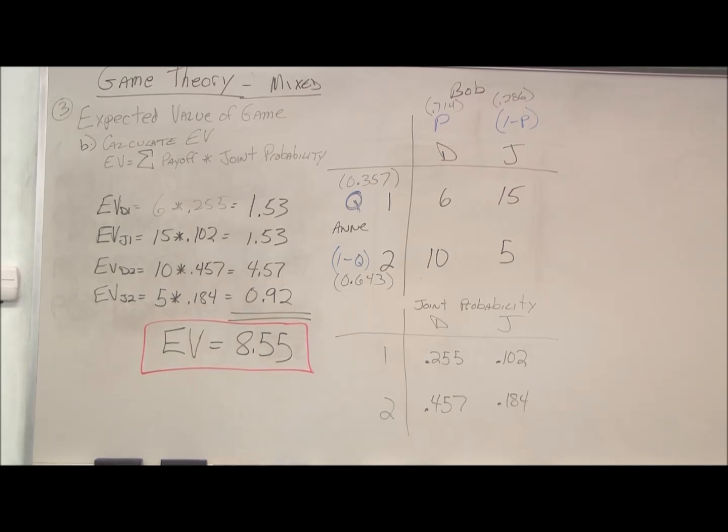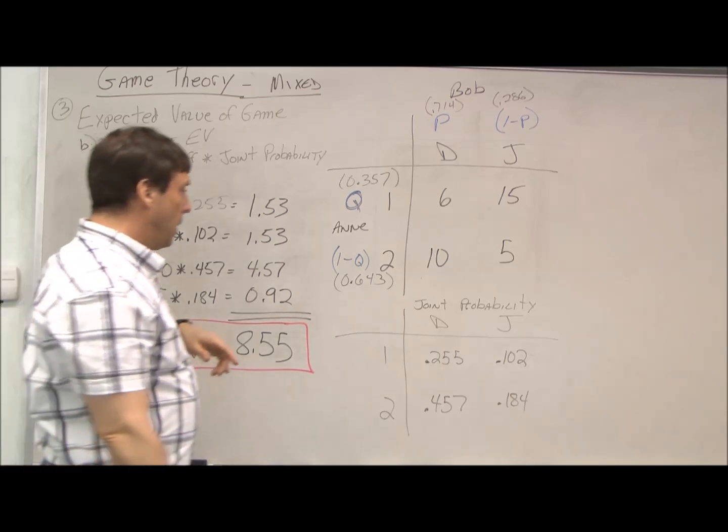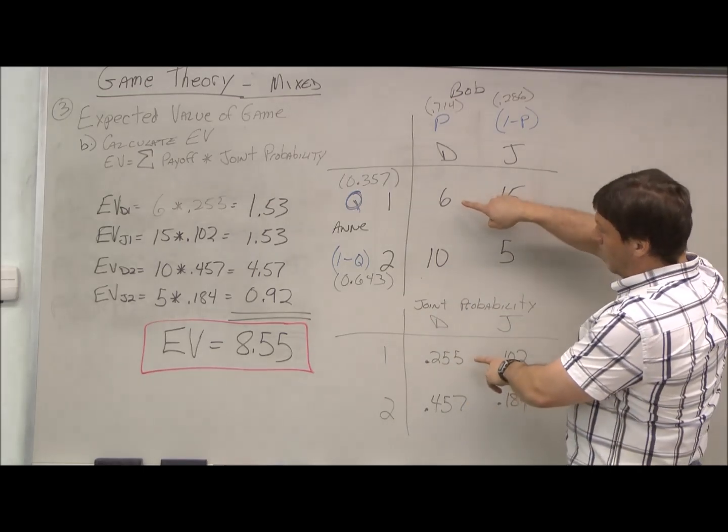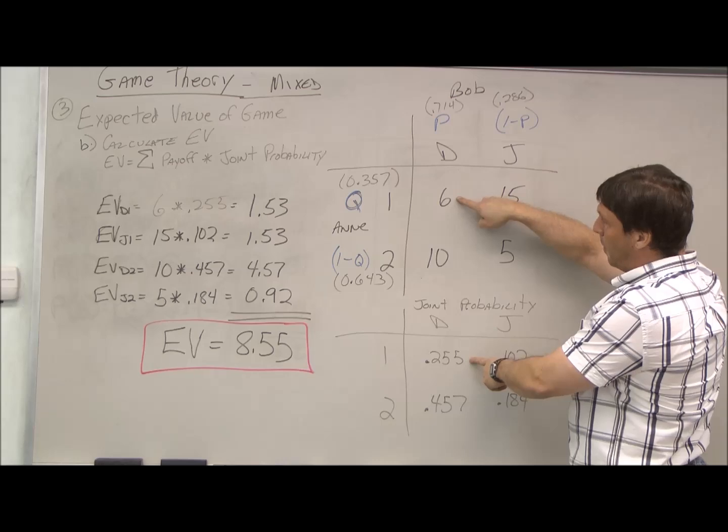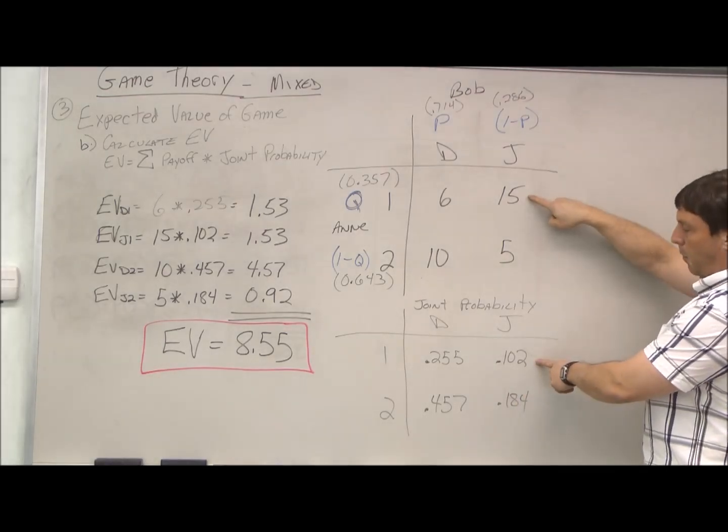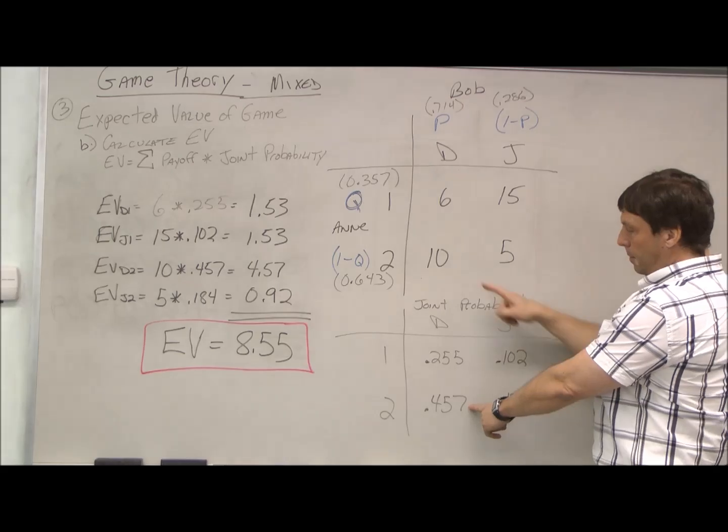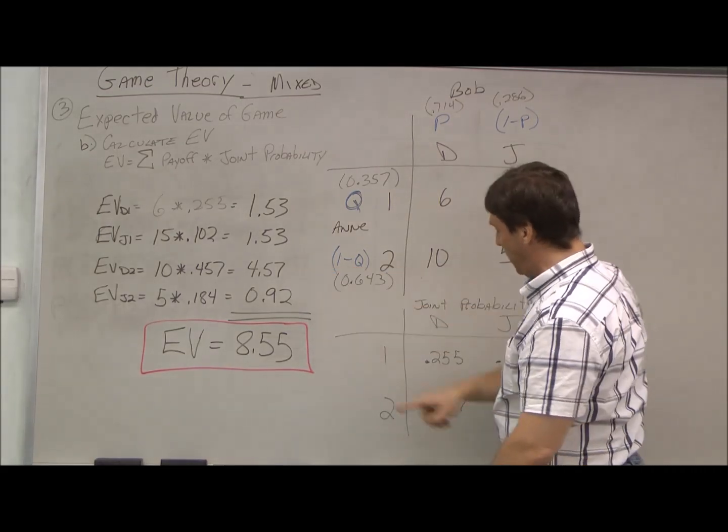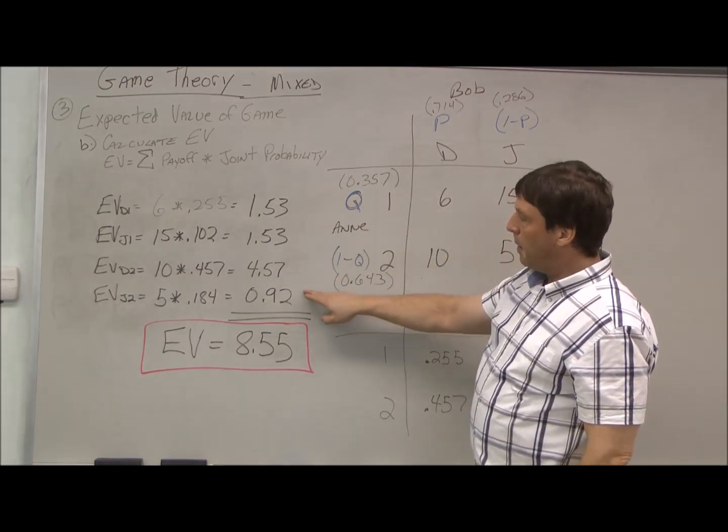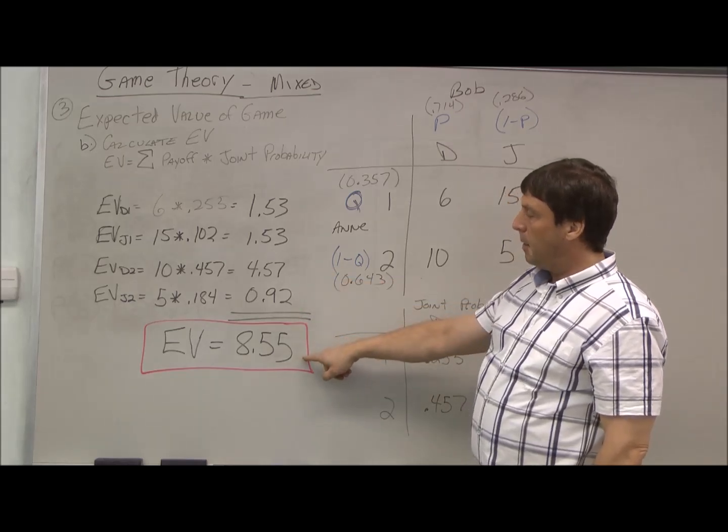Finally, we can calculate the expected value of the game. To calculate the expected value is just the sum of the payoffs times the joint probabilities. So I've written the joint probabilities out as a second table here just to make it easier to visualize. What we do is we take the value and multiply it by its joint probability. So six times 0.255, 15 times 0.102, 10 times 0.457, and 5 times 0.184.